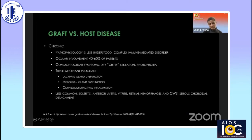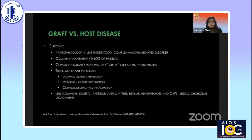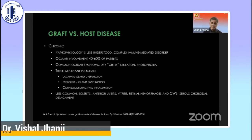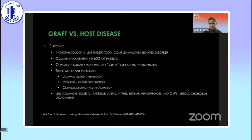Chronic GVHD is what we see more commonly in the clinic. The pathophysiology of chronic GVHD is less well understood. Ocular involvement is high — 40 to 60% of these patients will have ocular involvement at some point in their disease. Common ocular symptoms are dryness, and everything ensues after that. Three important processes occur: lacrimal gland dysfunction — these glands are essentially being destroyed — and meibomian gland dysfunction, which is actually as bad as lacrimal gland dysfunction. Together, these lead to a very poor ocular surface.